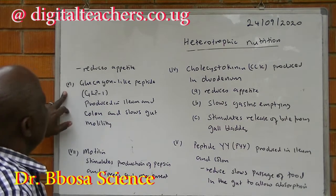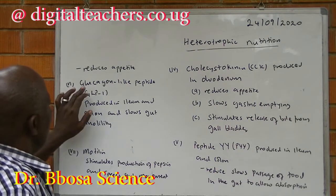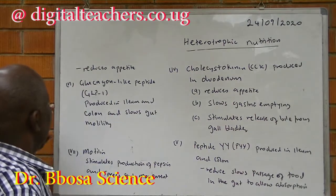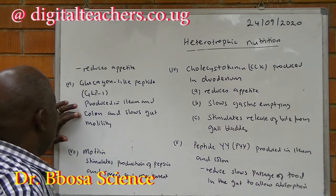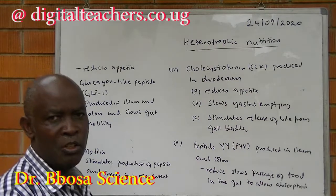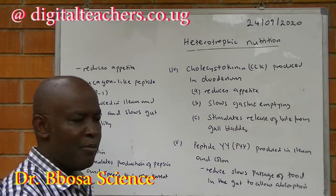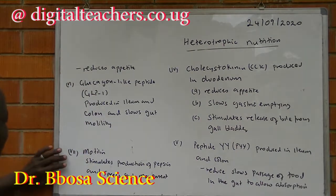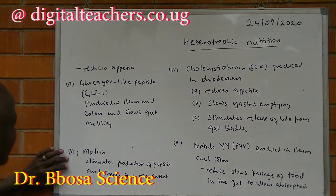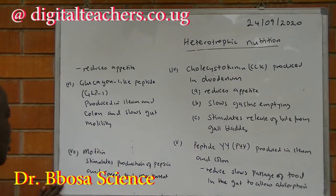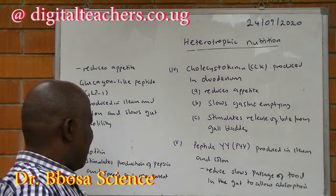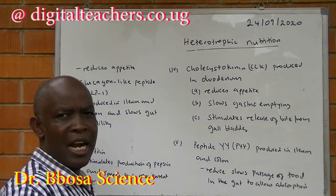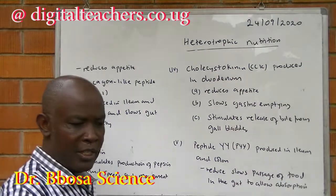PYY also reduces appetite. Glucagon-like peptide is produced in the ileum and colon and slows gut motility. Motilin stimulates production of pepsin and speeds up gut movement.